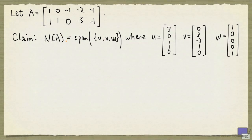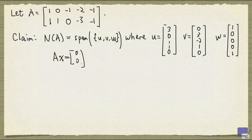How do you verify this claim? Recall that N(A) is the set of solutions to Ax equal to 0 tuple, and the span of the set u, v, w is the set of all linear combinations of u, v, and w.